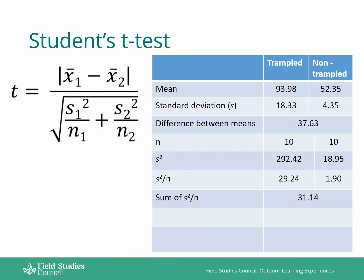Adding those two together gives us 31.14, and then the next step is just to square root that answer to complete the bottom half of our equation. So we've now got the square root of the sum of standard deviation squared divided by n. That is the whole of the bottom half of our equation.